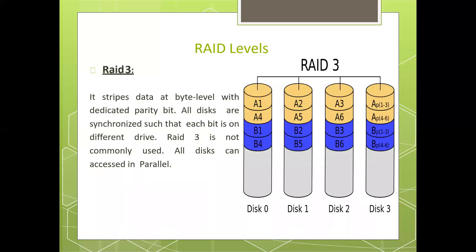RAID level 3 stripes data at the byte level with a dedicated parity bit. All disks are synchronized such that each bit is on a different drive. RAID 3 is not commonly used. All disks can be accessed in a parallel way.